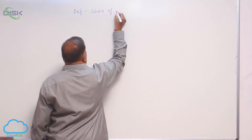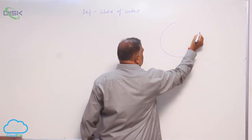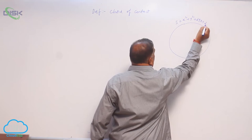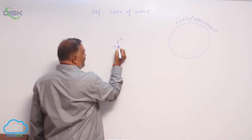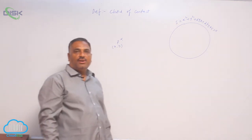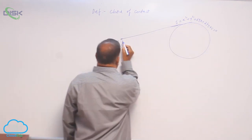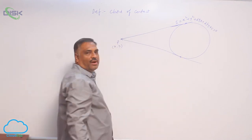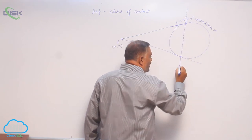Chord of contact. Let us take a circle equation: S is equal to x squared plus y squared plus 2gx plus 2fy plus C is equal to 0. Let P(x1, y1) be any external point. From an external point, we can draw two tangents to the given circle — a first tangent and a second tangent. The points where they touch the circle are called points of contact. The line joining these two points of contact is the chord of contact.